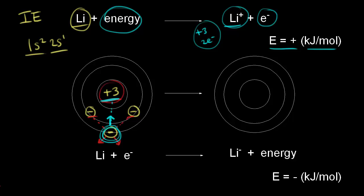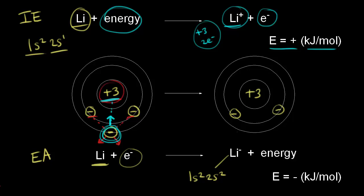Let's compare that with electron affinity. In electron affinity, let's say we're starting with our neutral lithium atom again, but this time instead of taking an electron away, we are adding an electron. We would add an electron to the 2s orbital. We started off with three electrons in the neutral lithium atom and we're adding one more, so the electron configuration for the lithium ion would be 1s2, 2s2 — still three positive charges in the nucleus, two electrons in the 1s orbital, but now we have four electrons total, two in the 2s orbital.